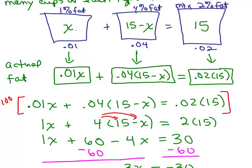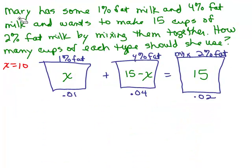X stood for how many cups of the 1% fat I'm going to use. So I'm going to draw this picture again and we're going to now put in 10 for x. X stood for how much of the 1% milk. So I'm going to put in 10 right here. Now remember we had 15 total and these had to add up to 15. So if you've got 10 plus what would give you 15, we must be using 5 cups of the 4% milk.